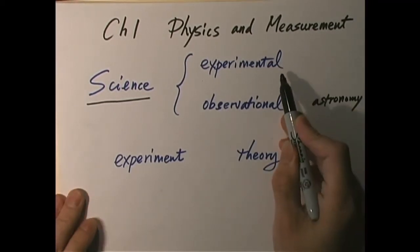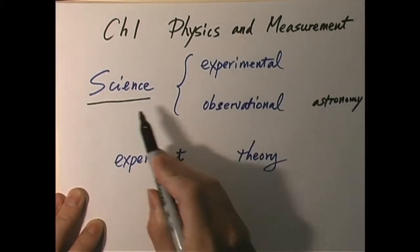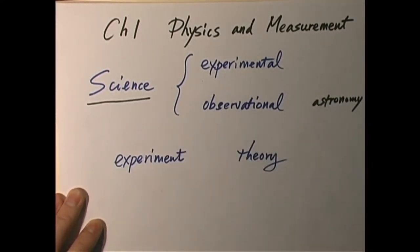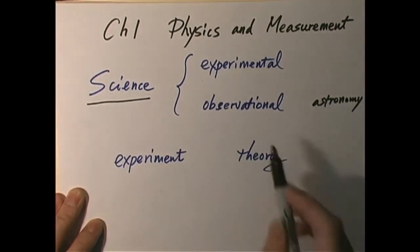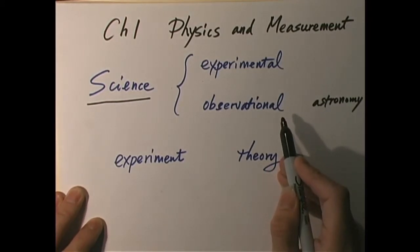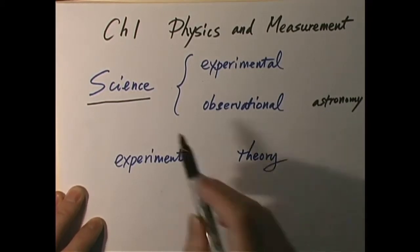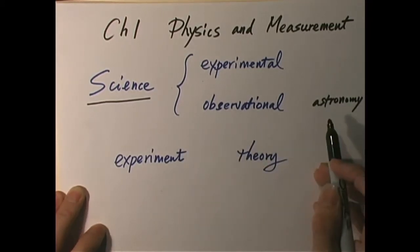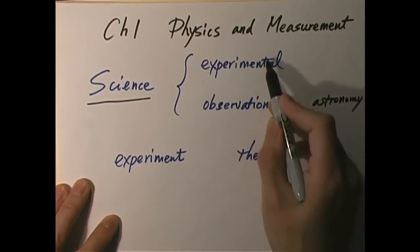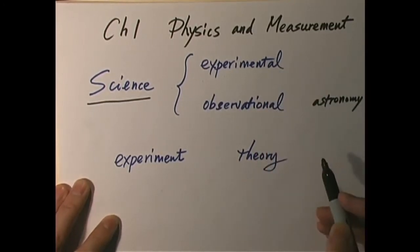Now, there are what's called experimental sciences, and there are what's called observational sciences. Either way, we are getting the laws of nature by looking at nature itself. But there is a slight difference between observational and experimental science.